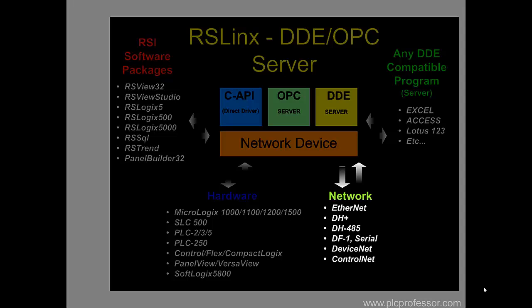Network-wise, these are not the only protocols available but they represent the basics of NetLinx. Normally when we say NetLinx we think Ethernet IP, DeviceNet, and ControlNet. There is a difference between Ethernet IP and Ethernet: Ethernet IP is Ethernet Industrial Protocol, and it uses a combination of UDP and TCP in that layer of the seven-layer OSI model. So there's an Ethernet devices driver and there's an Ethernet IP driver. Data Highway Plus is probably the oldest network of the bunch here, followed by DF1 serial, DH-485, DeviceNet, and ControlNet.